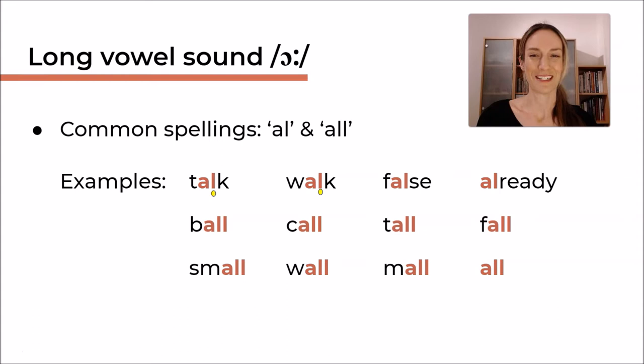Okay, let's practice the other ones: false, already, ball, call, tall, fall, small, wall, mall, all. It's quite funny how many words in English have that spelling pattern. You could write a little poem because they all rhyme. They have the same last sound. So if you want to go back and practice them once more, please do. We're going to move on to another spelling pattern.